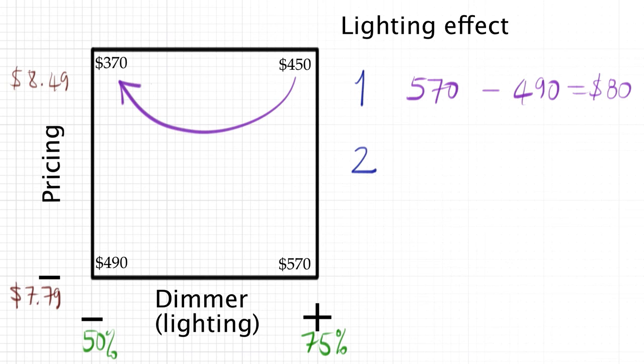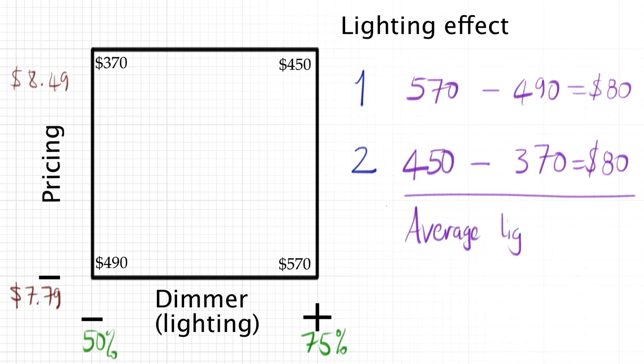Now let's look at the difference in lighting when pricing is at the high value. This time it's 450 minus 370, that's a difference of $80 again. So we can see then, the effect of lighting causes our profit to increase by $80 as we move from a low level of light to a high level of light. This effect is consistent both at low prices and at high prices.